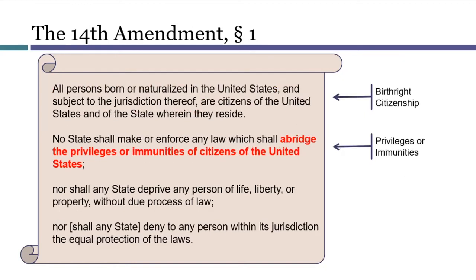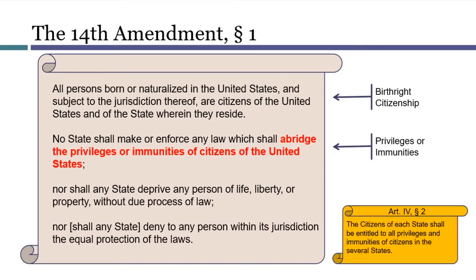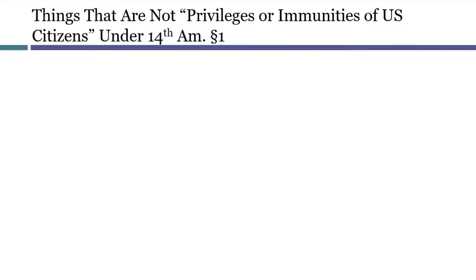The second sentence of Section 1 required the states to respect three categories of individual rights. The first of these involves the privileges or immunities of citizens of the United States. This language may seem familiar because a portion of the original Constitution from 1787 said that states needed to give citizens of other states the same privileges and immunities as their own citizens enjoyed. There may have been some parallels to draw between the older Article 4 Privileges and Immunities Clause and this new 14th Amendment Privileges or Immunities Clause. However, a series of Supreme Court decisions has rendered the Privileges or Immunities Clause of the 14th Amendment pretty unimportant.